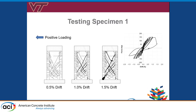This is an AutoCAD representation of the cracking pattern as it developed. At 0.5% drift we have diagonal cracks all the way up the specimen. At 1% drift, those cracks are really localizing and getting a lot larger. And at 1.5% drift, we have the shear crushing failure in the toe.